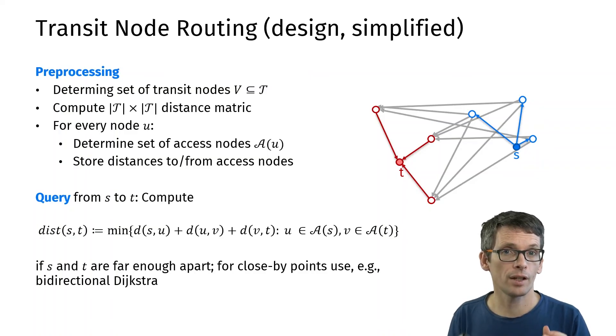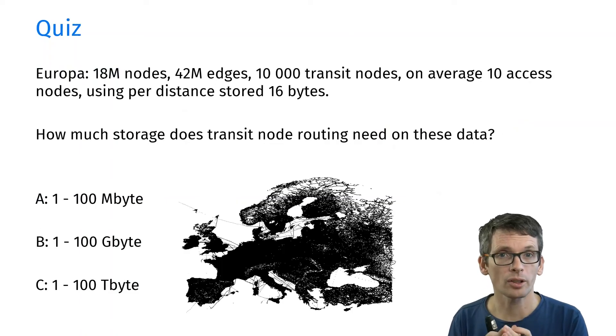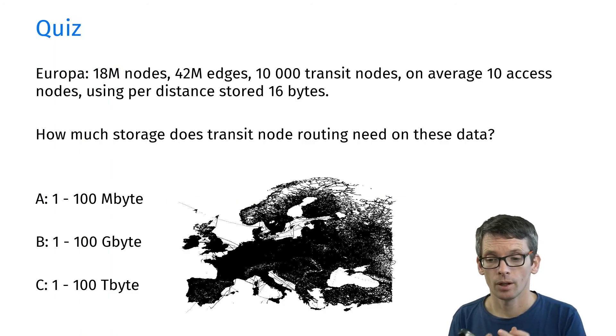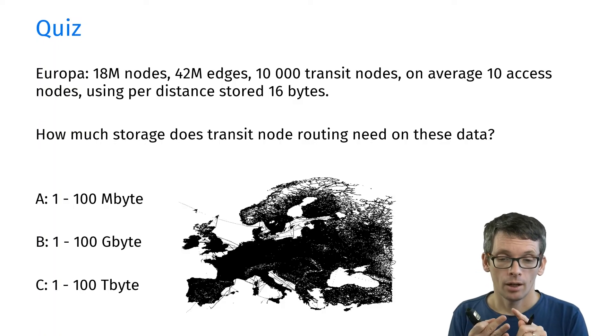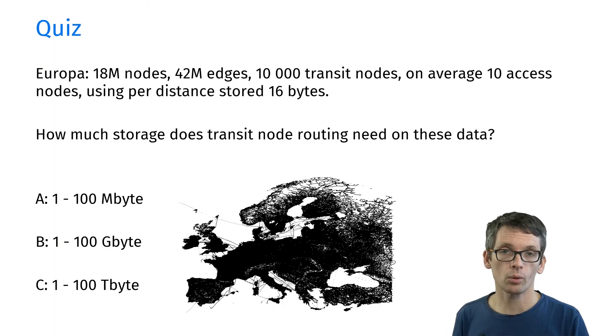Now is this feasible? Let's think about it in a quiz. How much storage do I need to do this? I have Europe 18 million nodes, 42 million edges, let's say 10,000 transit nodes, on average 10 access nodes. Let's say for distances, to store distances, I use 16 bytes. How much storage do I need for this approach? Is it in the range of megabytes, gigabytes or terabytes?